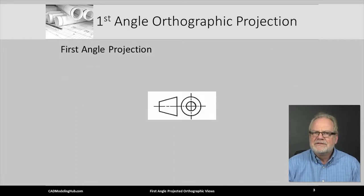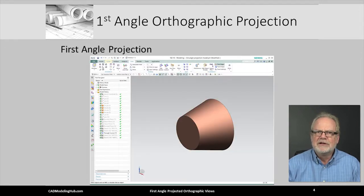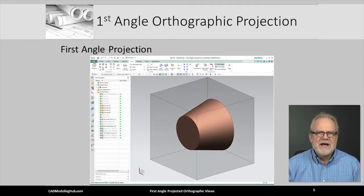This is the symbol placed on engineering drawings to denote that views of the drawing were created using first angle projection. To help you understand this symbol, I have created a truncated cone using the Siemens NX CAD system.